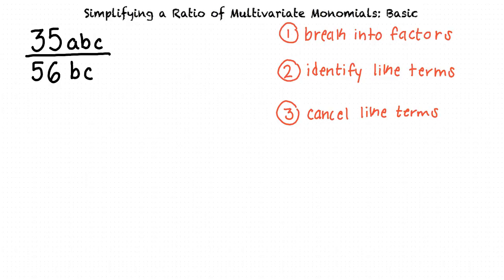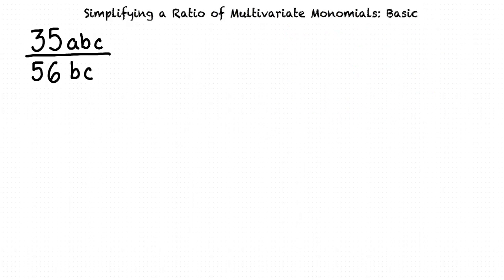Let's walk through an example problem together and simplify the ratio of our multivariate monomial 35abc over 56bc. The first step is to break our numerator and denominator into their factors so we can look for like terms to cancel out later.